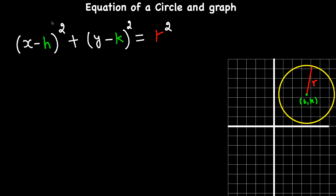In this video I'm going to go over how to write the equation of a circle and how to graph the equation of a circle. First of all, let's go over the standard equation of a circle, which looks like this: X minus H squared plus Y minus K squared is equal to R squared. Here, H and K represent the center of a circle and R is the radius.